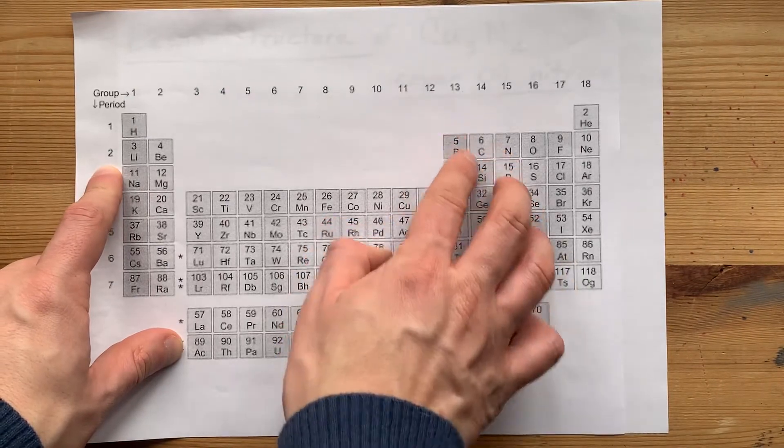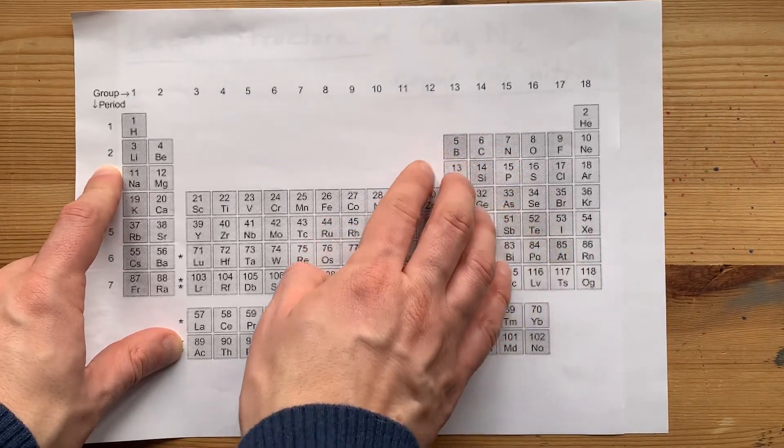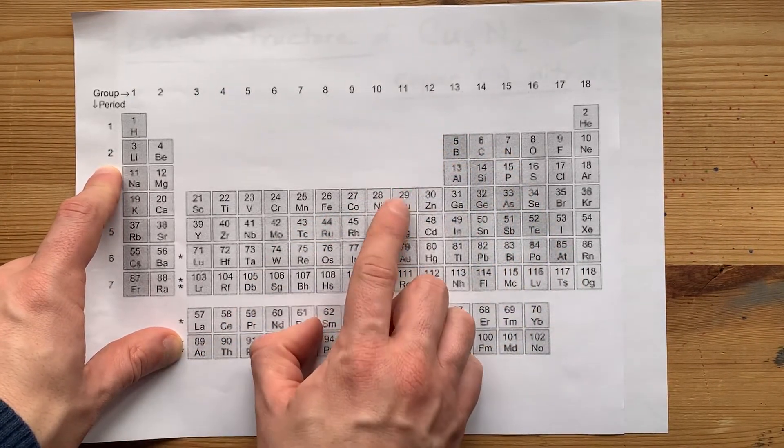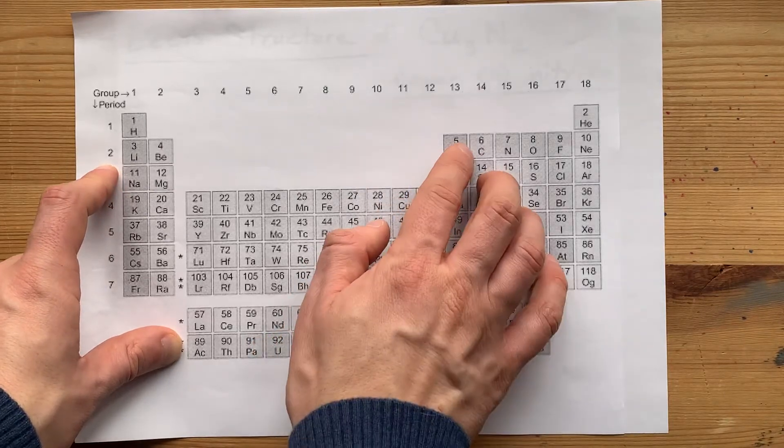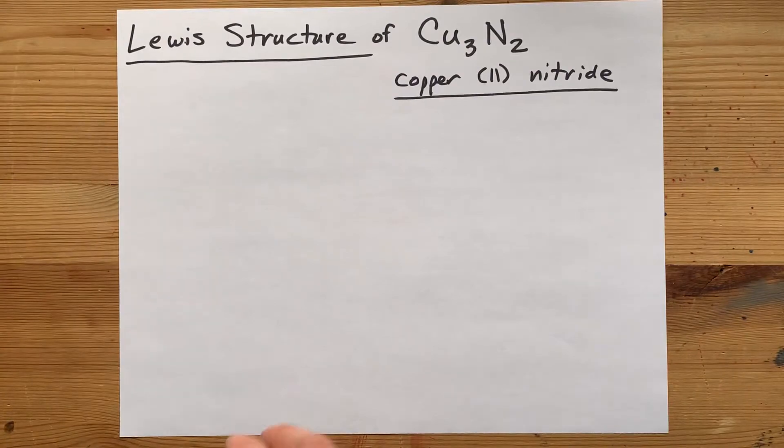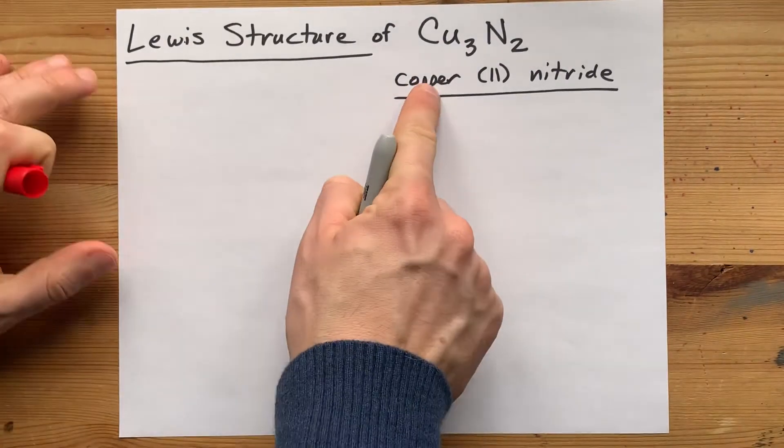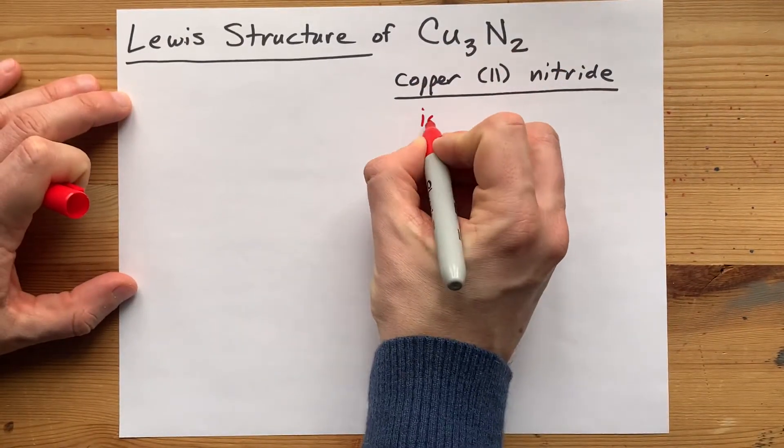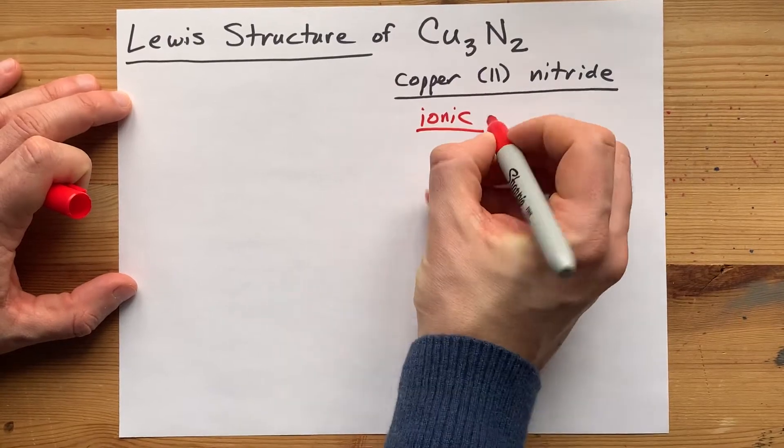This is a staircase of semi-metals. Anything to the left is a metal. That's copper. Anything to the right is a non-metal. That's nitrogen. The reason I'm telling you that is that metals and non-metals always bond to form ionic compounds,